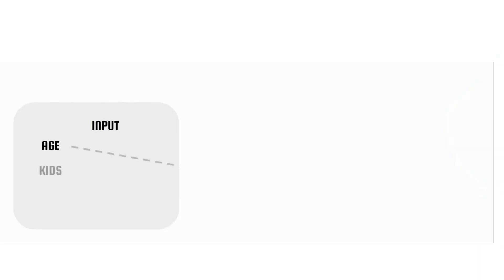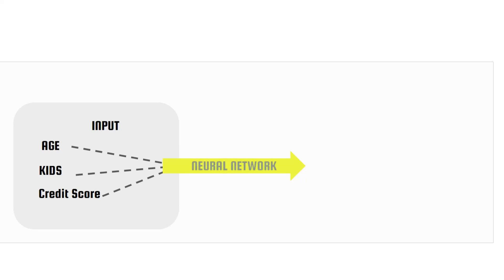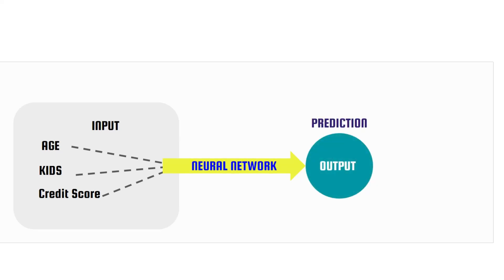Our inputs for that example would be age, how many kids they have, their expenses — things about their life that are relevant to our output. Most of the time when we're using inputs, we really want to make sure the inputs are tied to the outputs. The whole point of a neural net is to explore the interactions and correlations between the input variables and the output.